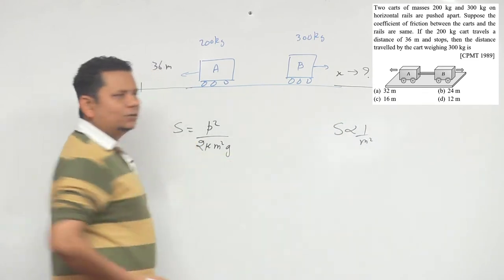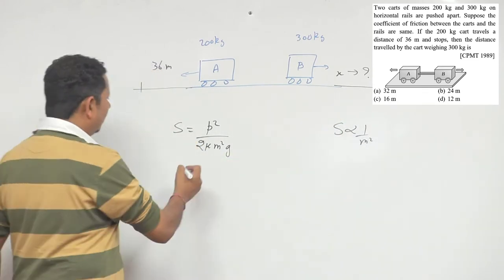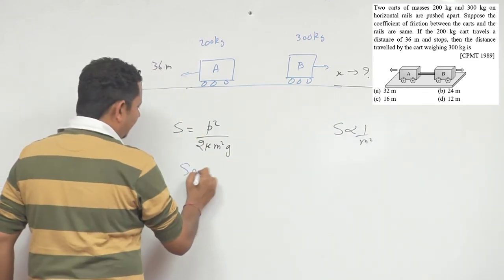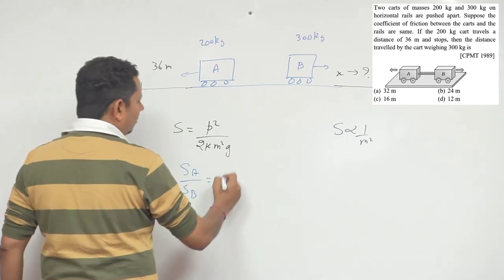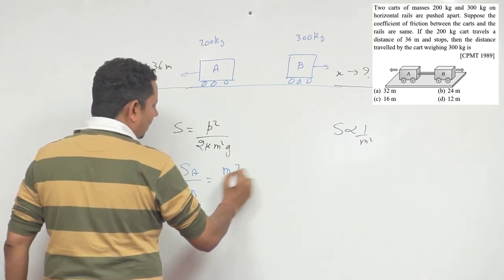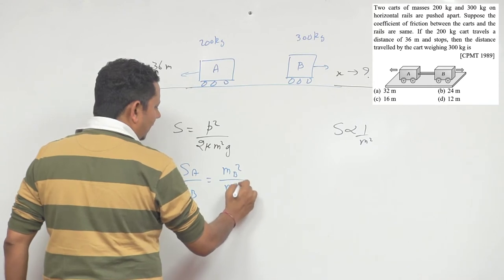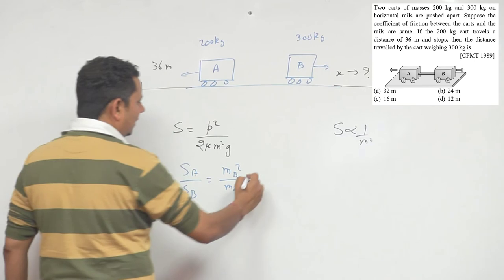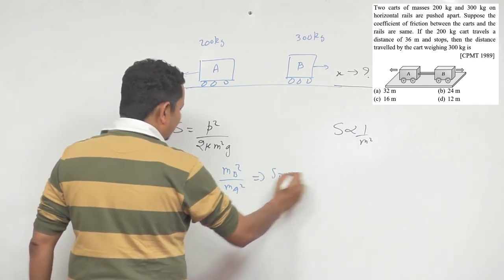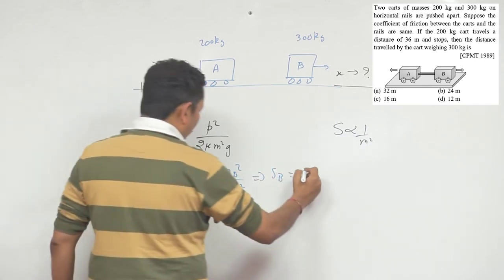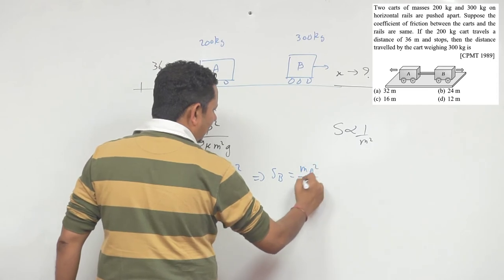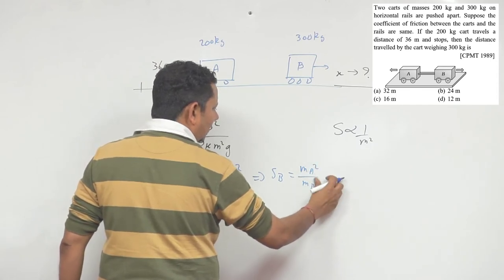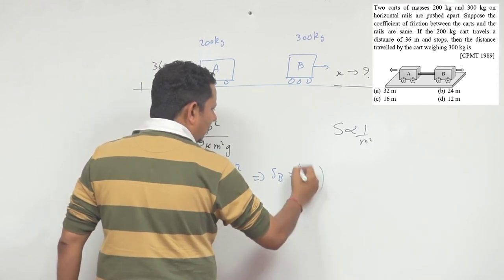That means s_a divided by s_b will be inversely proportional, so this will be m_b ka square divided by m_a ka square. We have to find the value of s_b - how much will it travel? All the data is given. This implies s_b will be equal to m_a square divided by m_b ka square - we have combined both into a square - multiplied by s_a.